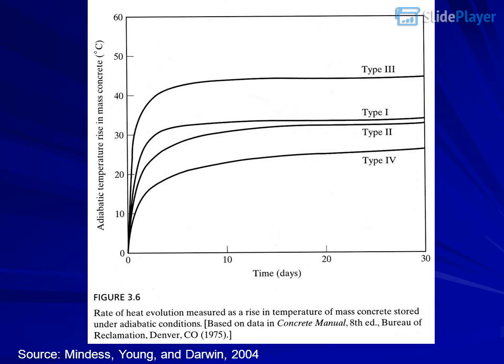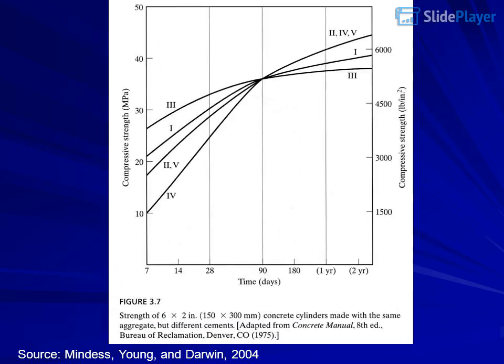Type V — High sulfate resistance. Source: Mindess, Young, and Darwin 2004. Type IV, low heat of hydration, is also discussed with microscopic image of clinker.